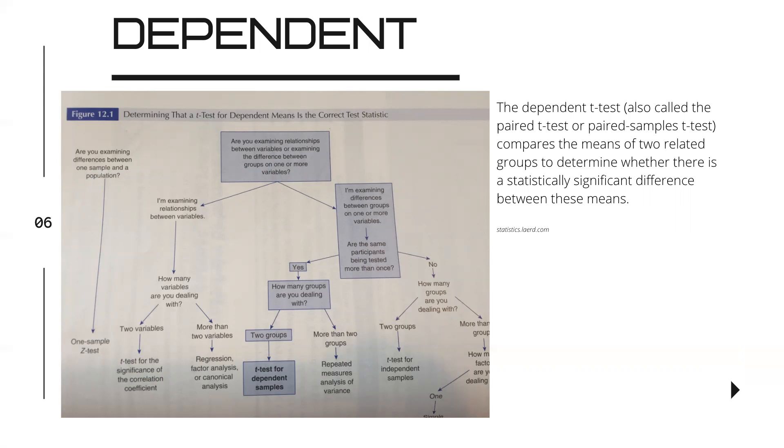How many groups are you dealing with? We're dealing with two groups. Then we know we're testing for dependent samples. You'll see these other areas of the chart show many different tests that will result in the answer that we were asking ourselves.